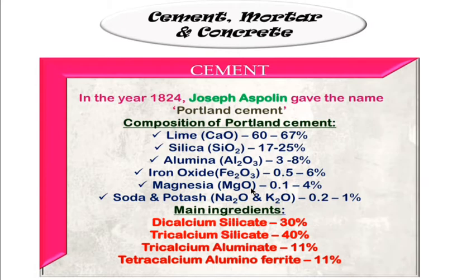The main chemical ingredients of cement — apart from Portland and ordinary cement types — are: dicalcium silicate at 30 percent, tricalcium silicate at 40 percent, and tricalcium aluminate and tetracalcium aluminoferrite at 11 percent.